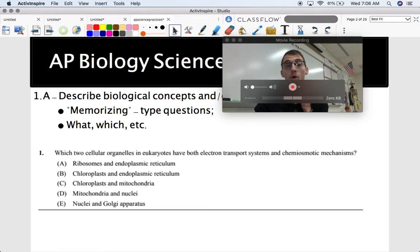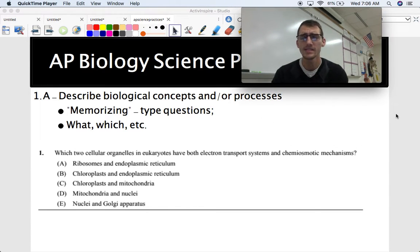This is one point A, describe biological concepts or processes. And I know that I was just talking about how it's not only important to know what you have to know for the AP Biology exam, but also what you have to be able to do. And this is just kind of like knowing stuff about AP Biology or Biology itself. And these are kind of like the memorizing type questions or in the teacher business, what you might call these low-level questions, where they just ask you to describe something. Like what is it? Which is it? That kind of stuff.